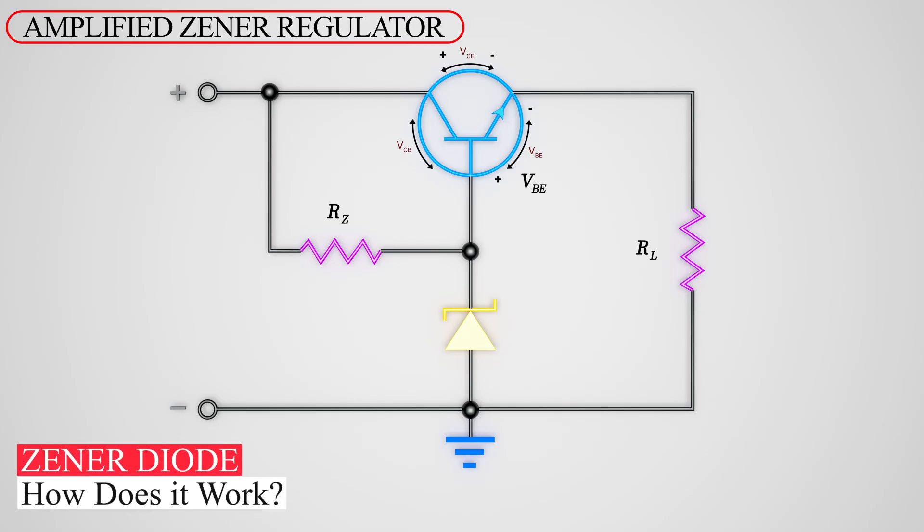An amplified Zener regulator controls voltage levels across a circuit. The regulator gets its name from its primary component, the Zener diode.